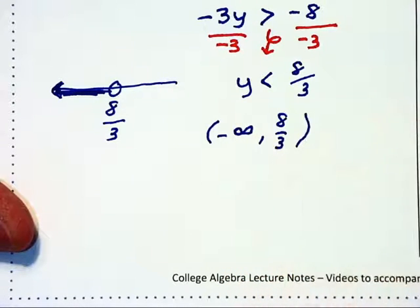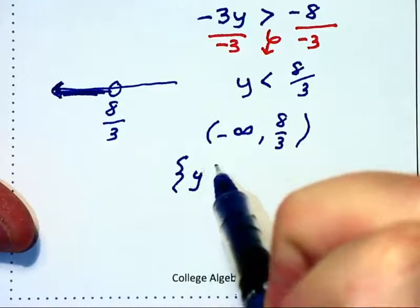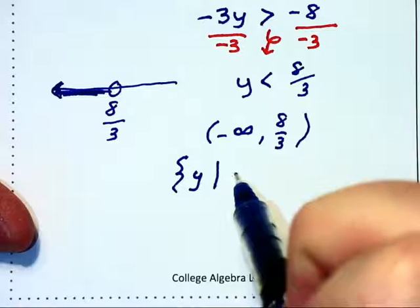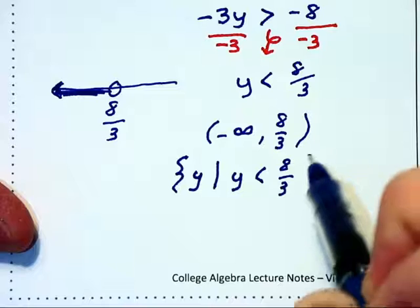And written in set builder notation, this would be the set of all y values, such that y is less than 8 thirds.